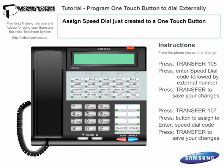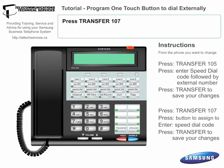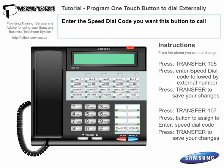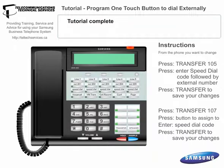Now let's assign that speed dial to a one-touch button — usually these by default. Press Transfer 107. Press the button you want to program. Dial the speed dial selection you want this button to call — for example, 02 to enter the one we just programmed. Press Transfer again to save your changes. Press the button to double-check. Thank you.